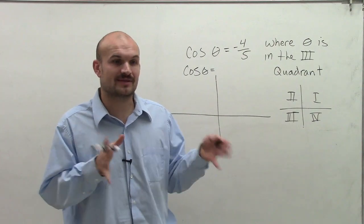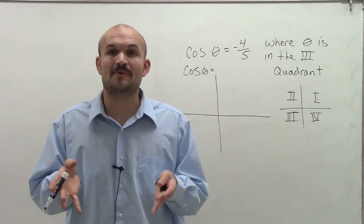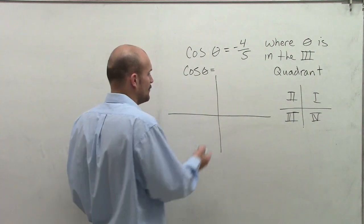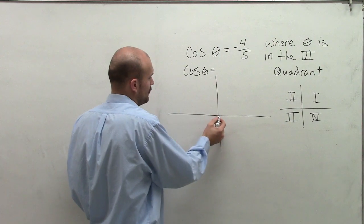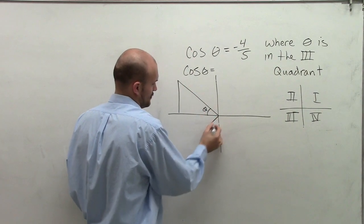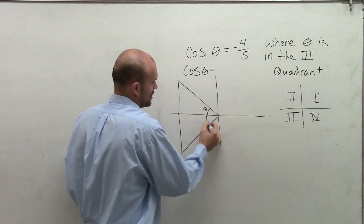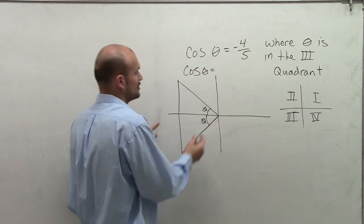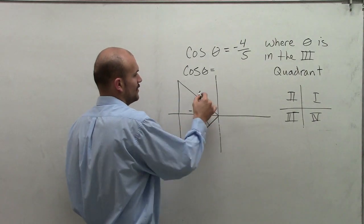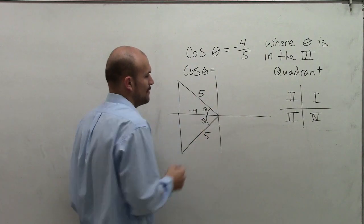It also represents, when thinking about coordinate points, the x value over the hypotenuse. So therefore, what we could look at is we could create two different triangles, where here would be theta, or we could have a triangle where here's theta. Because we could both say that negative 4 is your x value and 5 is going to be our hypotenuse.